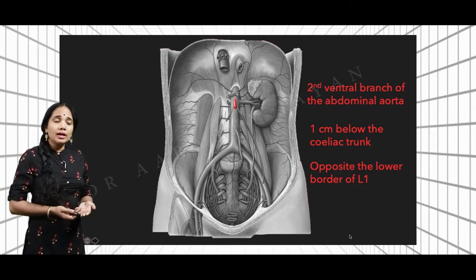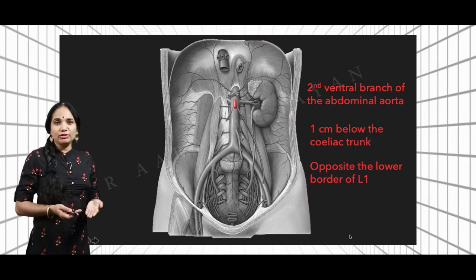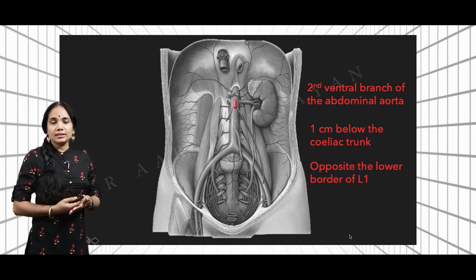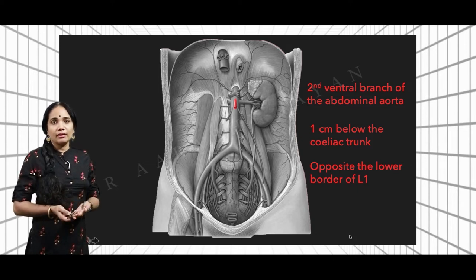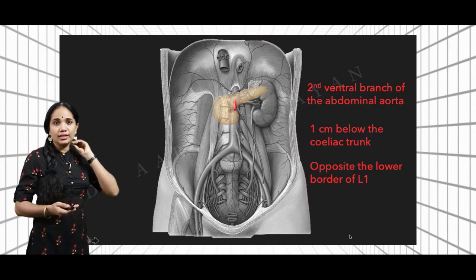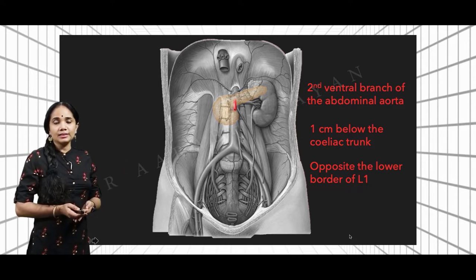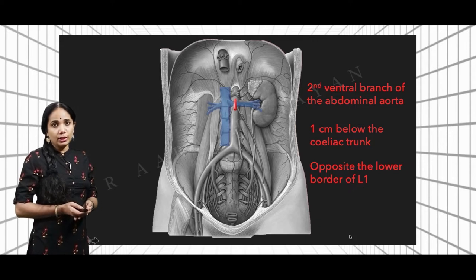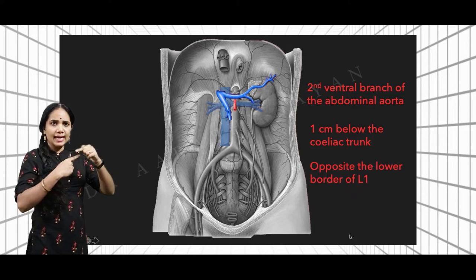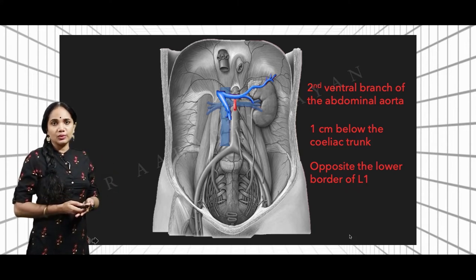The ventral arteries of the aorta specifically supply areas depending on the embryological origin of the gut. At its origin, the superior mesenteric artery is overlapped by the body of the pancreas, and it lies between the left renal vein below and the splenic vein above. So these two structures sandwich the superior mesenteric artery between them.